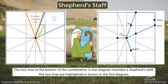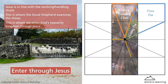The two lines at the bottom of the constellation in the diagram resemble a shepherd's staff, highlighted in brown in the first diagram. Jesus is the line with the working, handling chute — this is where the Good Shepherd examines the sheep. This is where we enter God's heavenly kingdom through Jesus.